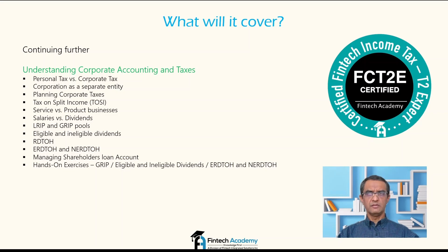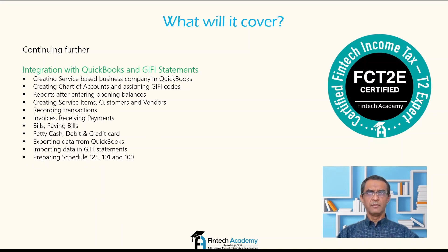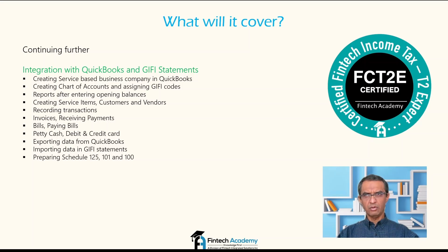Once we have a good understanding of all of these, we'll move on to integration with QuickBooks and GIFI statements. If someone uses QuickBooks or their client uses QuickBooks, we'll show how to get information from there into the income tax T2. We'll create a service-based business company in QuickBooks, go through the chart of accounts and assign GIFI codes in QuickBooks, generate reports, enter opening balances, create customers and vendors, put in some transactions, then export data from QuickBooks and import it into GIFI statements directly in Profile. We'll do a hands-on exercise to see how preparation of Schedules 125, 101, and 100 happens in Profile.